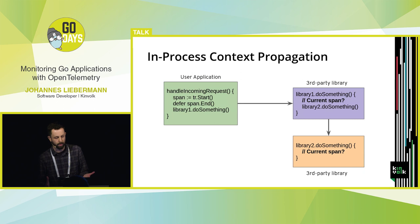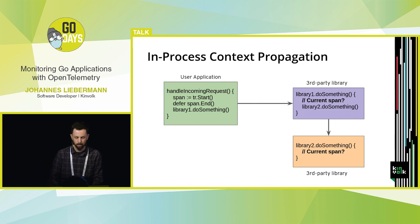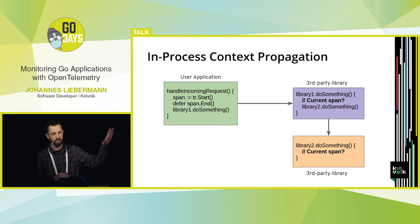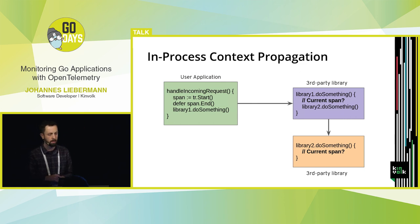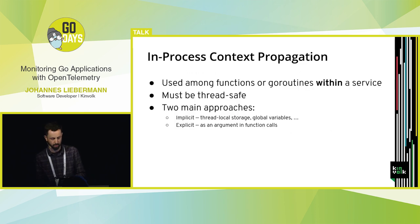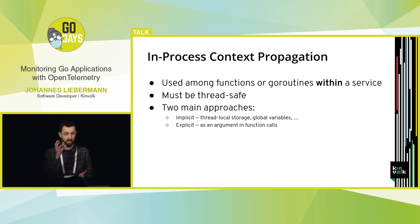Let's understand the problem. Imagine you're implementing the OpenTelemetry Go library. There is a user instrumenting their code — they're doing span.start, and then they're calling some open-source third-party library which is also instrumented using OpenTelemetry. The user application creates a span; the third-party library also needs to create a span, but it needs to be a child of the span created by the user application. How does the third-party library get information about the current span? In Go, the functions could be goroutines, so we need to be thread-safe — things could happen concurrently.